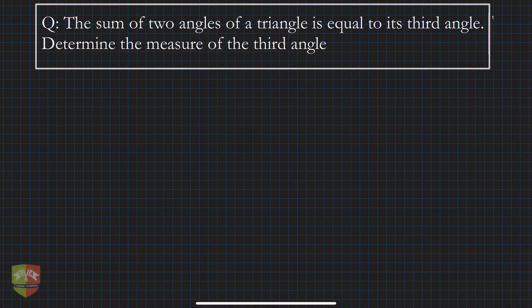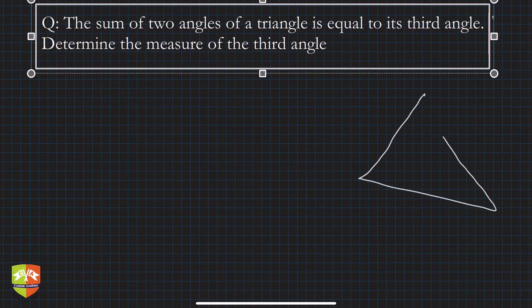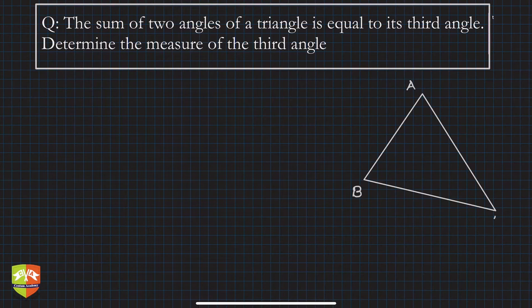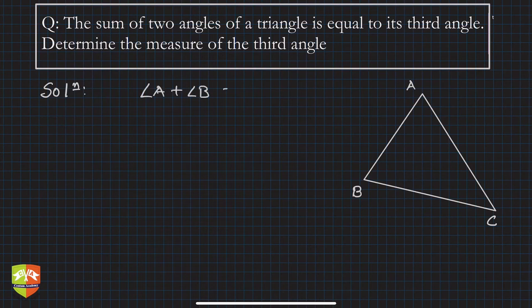In this question it's given that the sum of two angles of a triangle is equal to its third angle, and we have been asked to determine the measure of the third angle. Let's first draw the diagram. So let's say this is triangle ABC. The sum of two angles is equal to the third angle, so angle A plus angle B is equal to angle C.